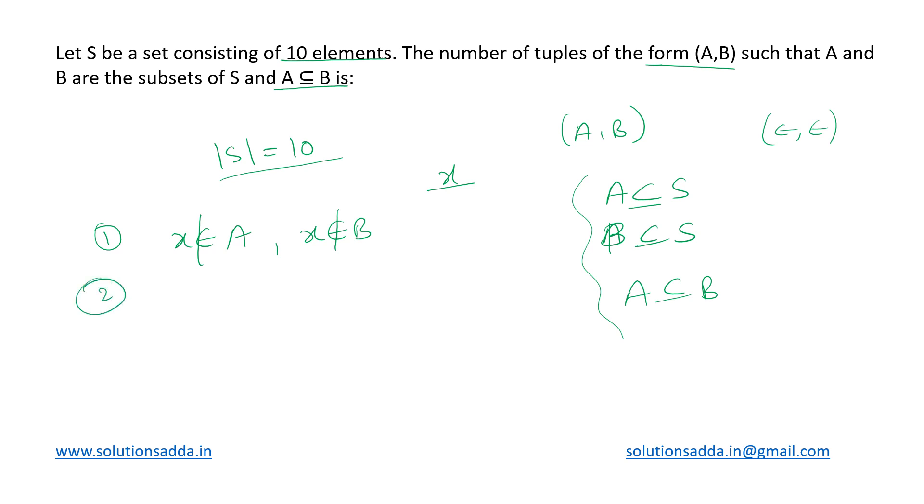The second choice would be that the chosen element x does not belong to set A but does belong to set B. By this, the third condition would be satisfied that A is a subset of B. So it is possible for an element to not exist in set A but still exist in set B.